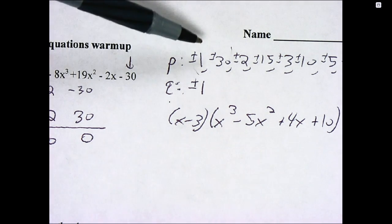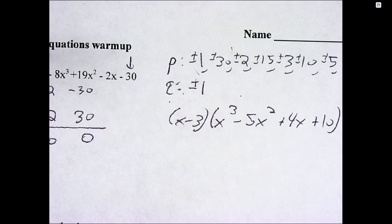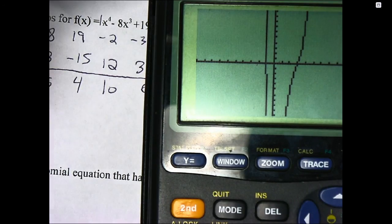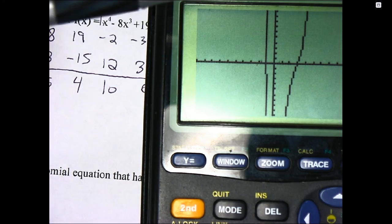I could make my P and Q list for this new function, graph the new function, but it's all in this previous work already. And so I'm going to again look at my graph. And when I look at my graph, I see it looks like an x-intercept at negative 1.